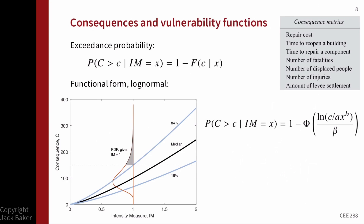Next we have vulnerability functions considering continuous consequences. In this case we're not going to have a probability of a specific outcome; rather, we're going to have continuous consequences and compute the probability of exceeding some threshold, conditioned on IM equals x. Since severe consequences are typically of interest, we frame this as one minus the CDF for the consequences.